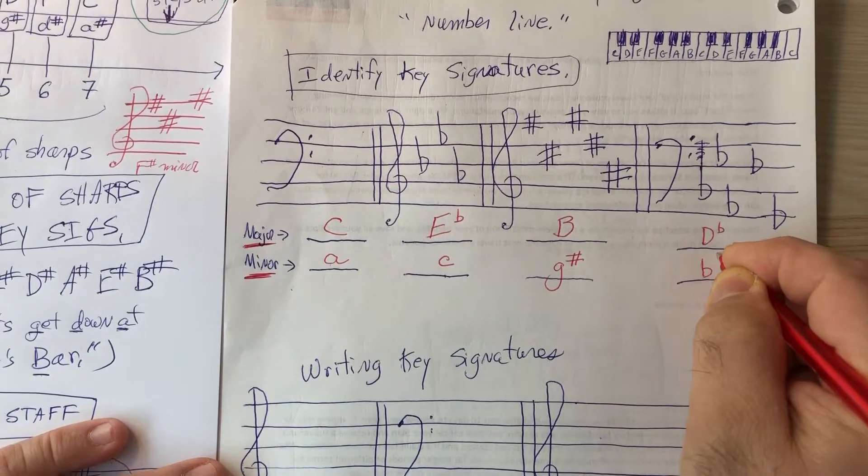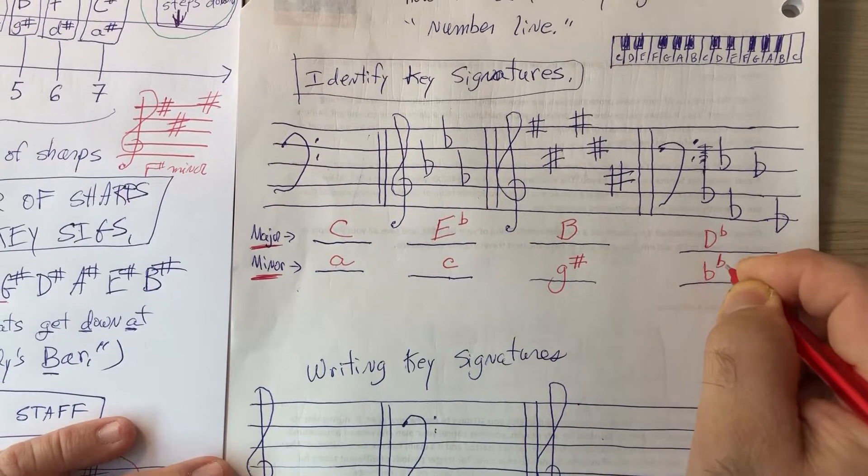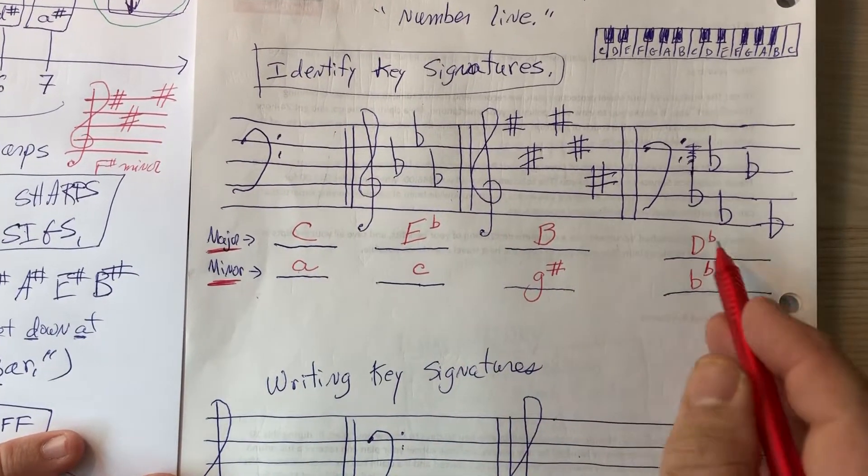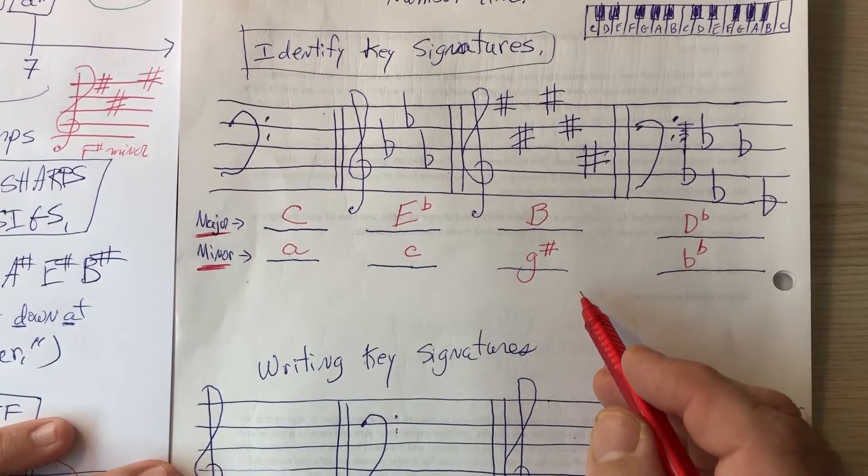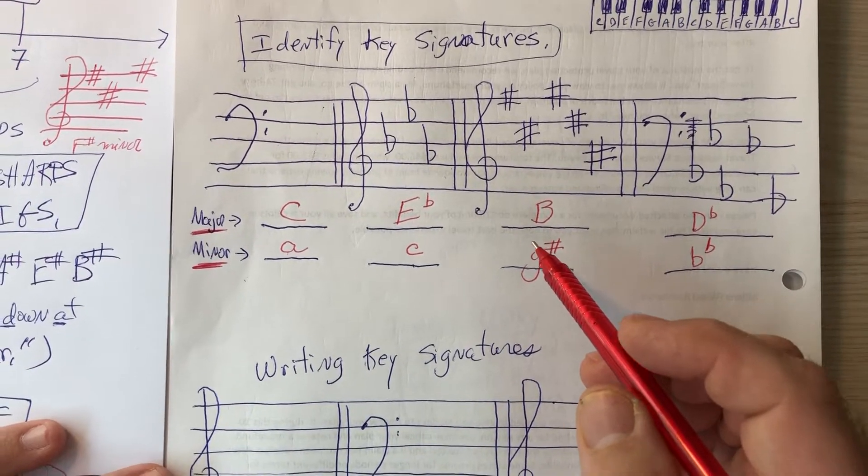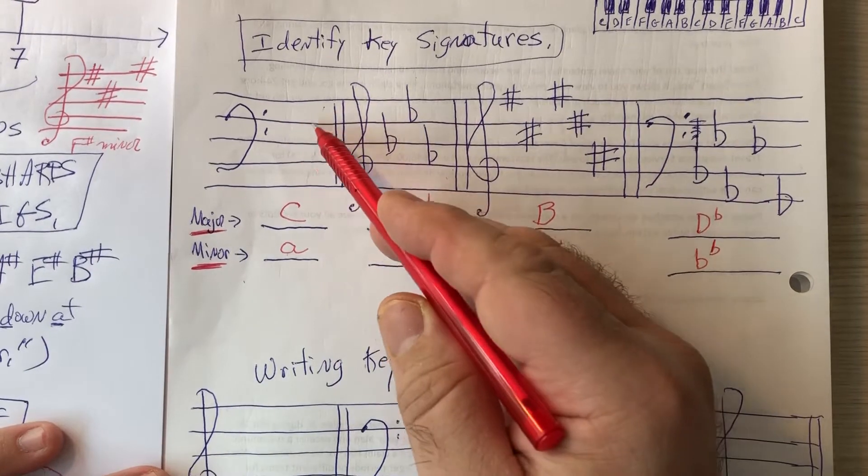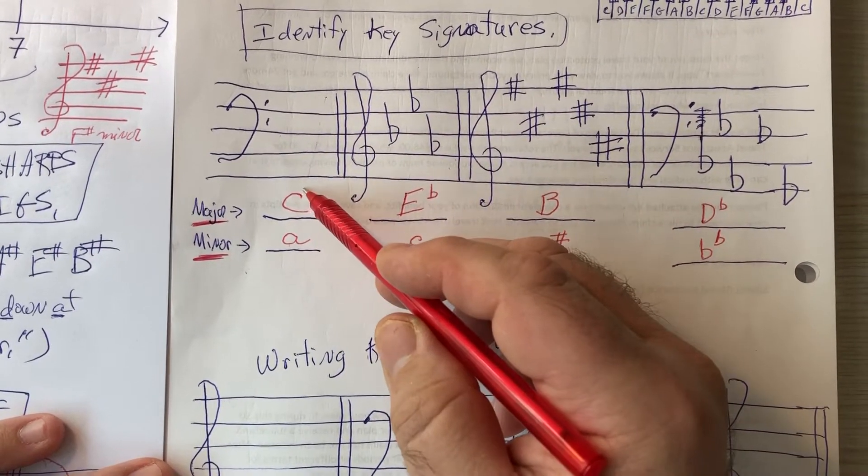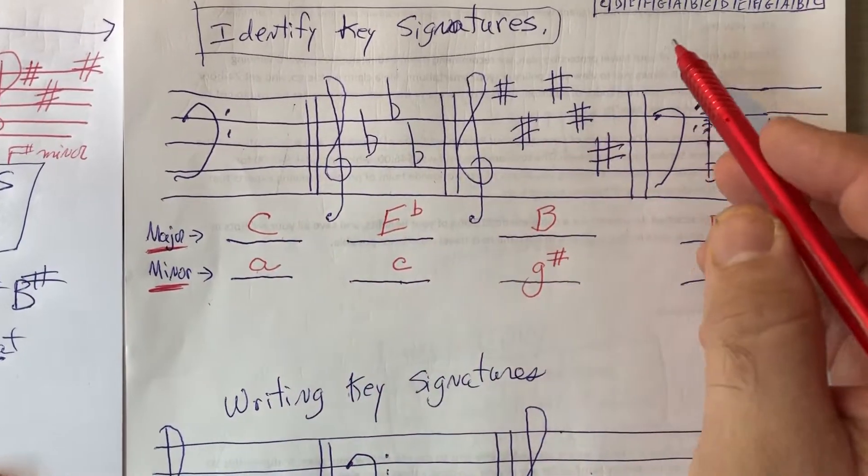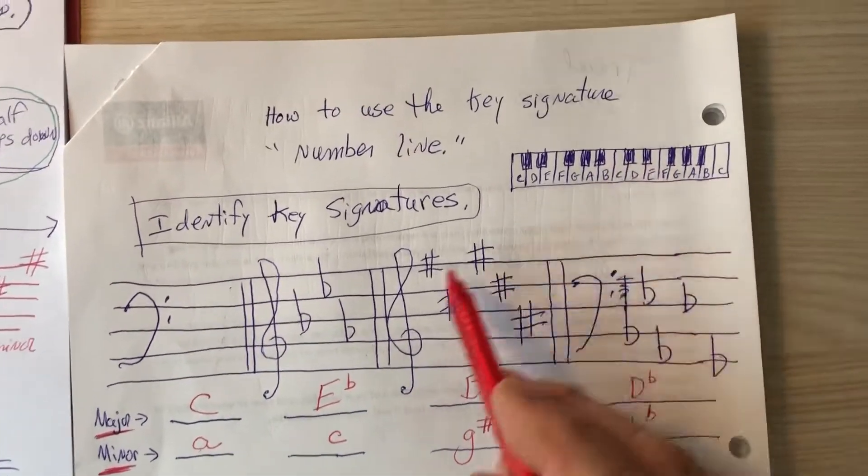Before we wrap up this short video, some students prefer using the rule method. So I'll just point out that the rules work for this also. You get the same results. In the rules we learn that no flats and no sharps is the key of C. So you would get that. If you go down three half steps from C, one, two, three, you end up on A.